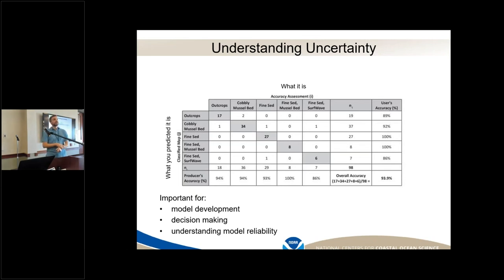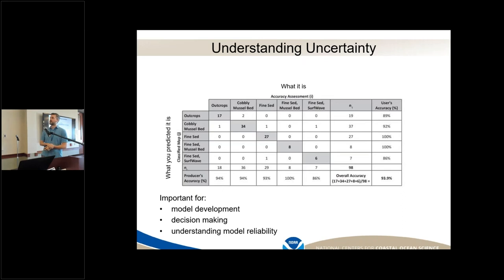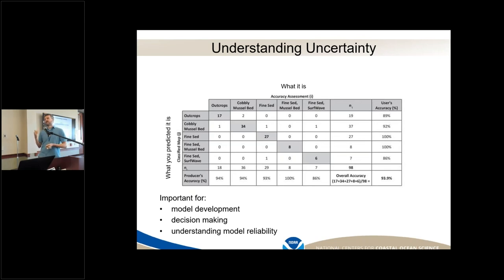The confusion matrix is also useful for decision makers. These maps are made for people to make decisions — where to put a wind farm, where to put a protected area, where to put a navigation lane. Providing information about where the model does a good job and where it does a poor job is helpful for them to make the right decisions. We want to quantify general model reliability and be upfront and transparent when we don't do a good job. Some data is better than no data, but knowing that relative level of reliability is important when making decisions.